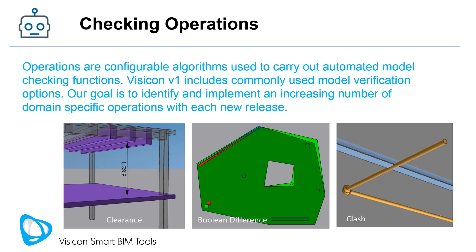This video describes Visicon's checking operations. Operations are configurable algorithms used to carry out automated model checking functions. Visicon V1 includes commonly used model verification options. Our goal is to identify and implement an increasing number of domain-specific operations with each new release.